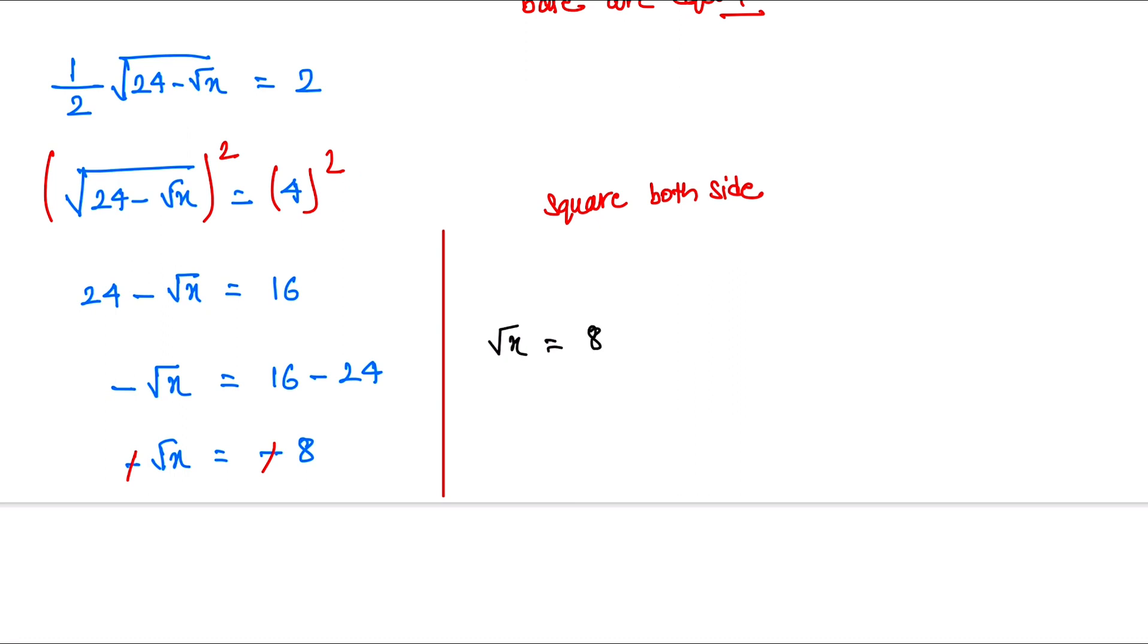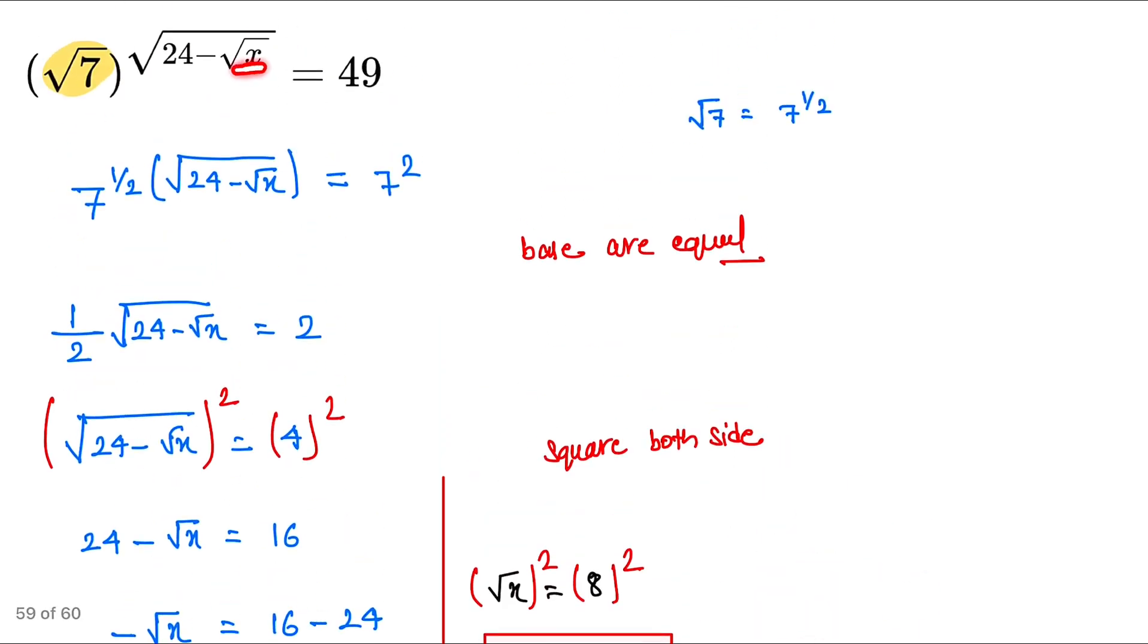Now we square again on both sides, so this becomes x and this becomes 64. So the value of x = 64, and this is our final answer.